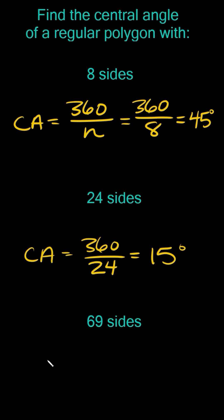All right, lastly here we have 69 sides. So the central angle here would be equal to 360 divided by 69, and that's equal to approximately, just rounding here, 5.22 degrees.